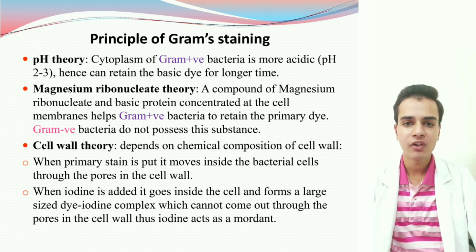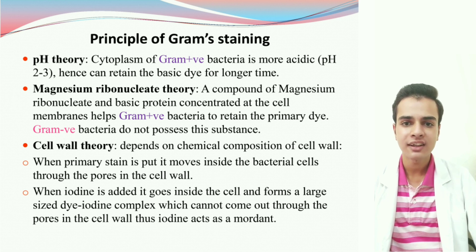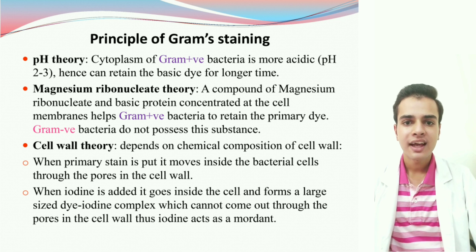The third and the most important theory is the cell wall theory. According to this theory, the Gram reaction of a bacteria depends on the cell wall composition. The events that happen during staining are as follows. First, when we put the primary stain, the stain molecules are small in size and can easily move in and out of the cell through the pores in the cell wall. Then, when we put iodine, the iodine molecules themselves are very small in size and can easily move in and out of the bacterial cell through the pores. But when both the iodine and the dye are present inside the cell, they form a complex known as the dye-iodine complex. The size of this complex is very large and it cannot escape easily through the pores. Thus, in this way, the iodine is acting as a mordant.